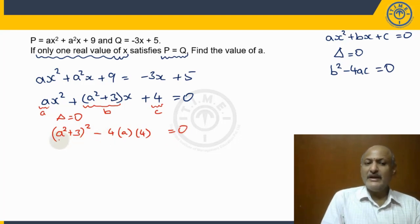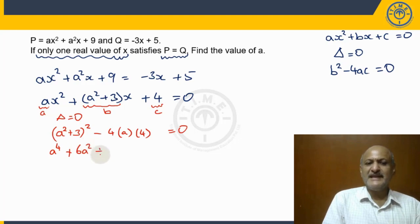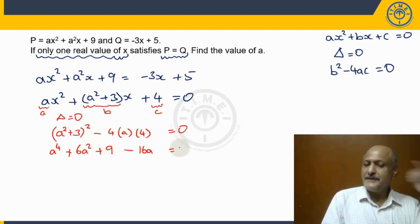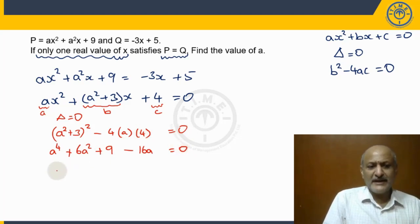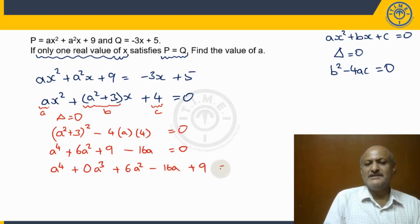If we expand this, we get: a⁴ + 2·3·a² + 9 - 16a = 0. That gives us: a⁴ + 6a² - 16a + 9 = 0. We can also write this as: a⁴ + 0·a³ + 6a² - 16a + 9 = 0.